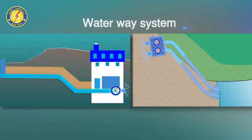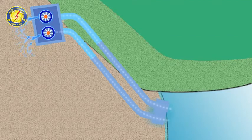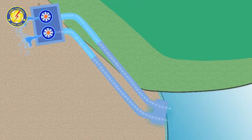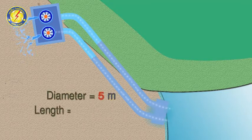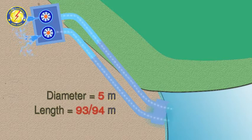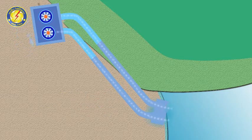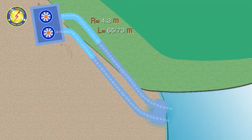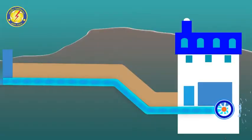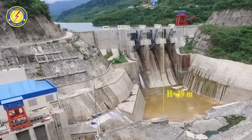Water intake and power tunnel: The power tunnel consists of a headrace, tunnel, and penstock. The tunnel is 5 m in diameter, and 93 to 94 m long. The penstock is 65 m and 73 m long, with a diameter of 4.3 m to connect with the water turbine. The design head is 39 m.